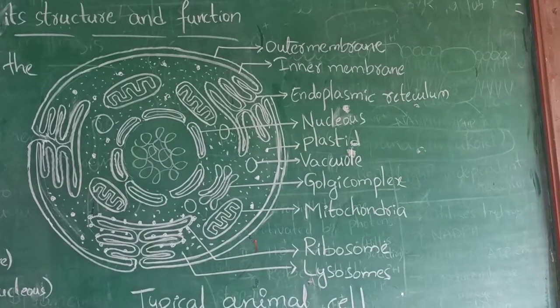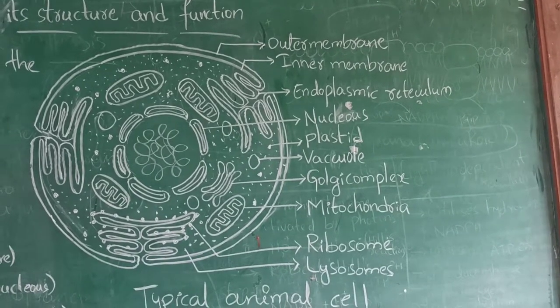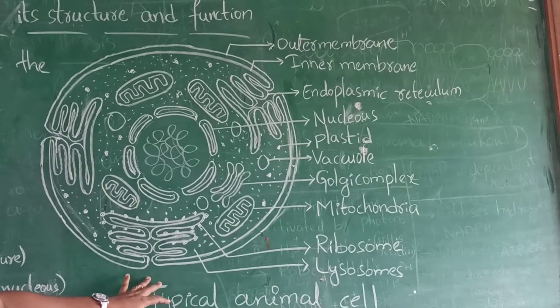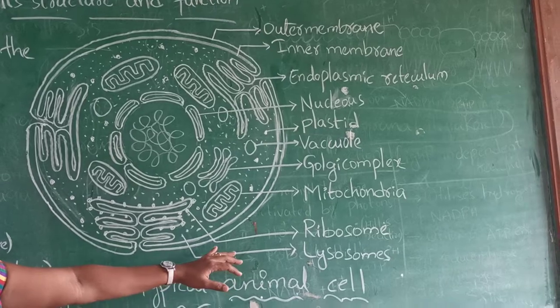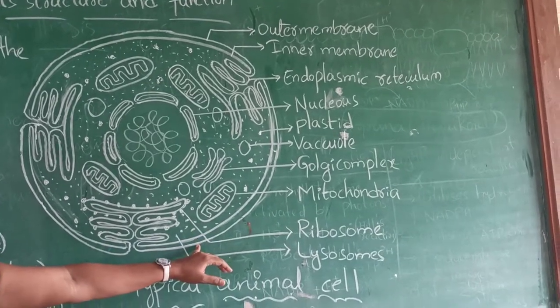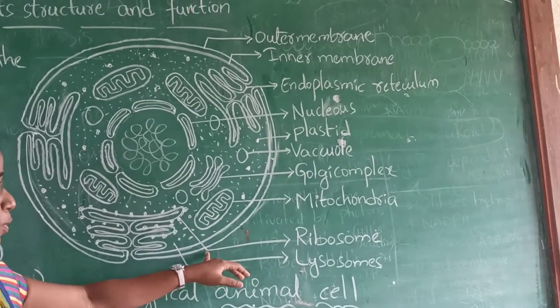70S in prokaryotes and 80S ribosomes will be there in eukaryotes. Prokaryotes is nothing but some unicellular organisms. And eukaryotes is an example of human beings, that is having 80S ribosomes. The ribosomes will be useful for protein synthesis.